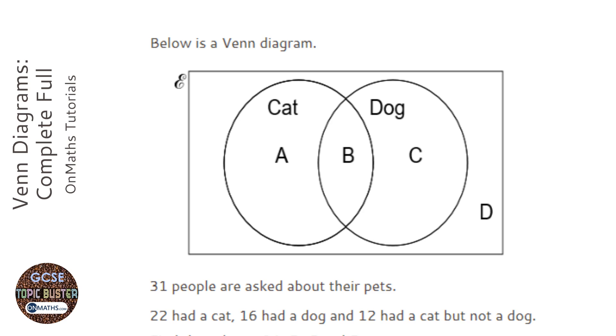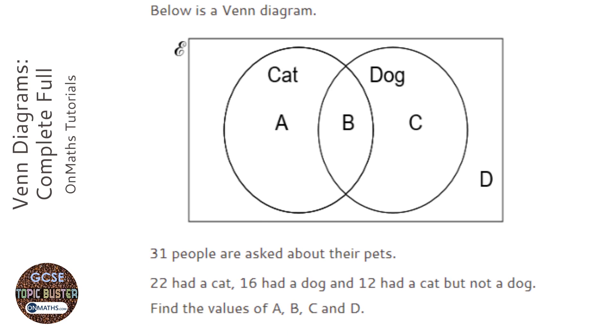Okay, so this question gives us some instructions underneath and a Venn diagram to fill out. So it says there's 31 people all together, so the four numbers we're trying to find, which is signified with the A, B, C and D, have to add together to make 31.